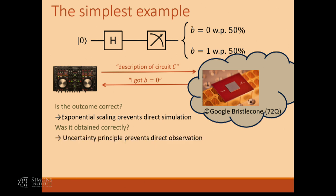Then we have the security or privacy questions. One question is: is there a way to delegate this computation to the computer in a way that preserves the privacy of the computation — hiding what computation I'm interested in. This would be an analog of homomorphic computation. And then there's the flip question, the zero-knowledge question: is it possible to implement protocols that achieve verified delegation of computation in a way that has the zero-knowledge property — so Google is able to convince me they're reporting the correct outcome without leaking any information about how they arrived at it.